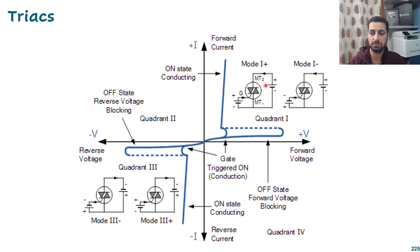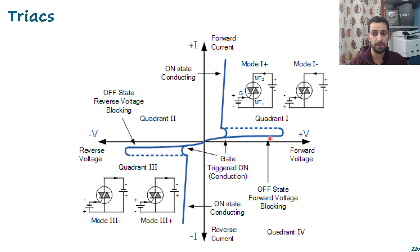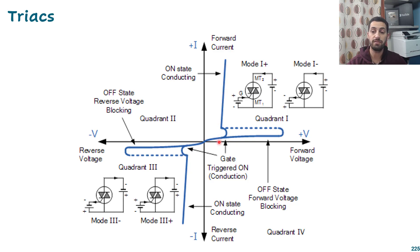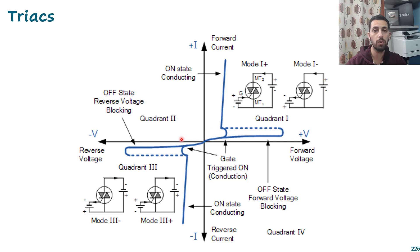Looking at the IV characteristics: on the positive side it behaves exactly like the thyristor — it will not conduct any current even if the voltage is high until you give a pulse on the gate. At that point it turns on, drops the voltage across MT1 and MT2, and passes current. The same thing happens in reverse bias: provide another pulse and it turns on passing current in the reverse direction. So it can control current flow in both directions.